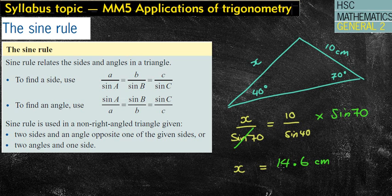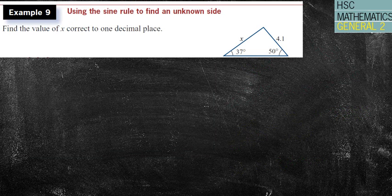The sine rule is used in non-right-angled triangles, as shown. And you need to have two sides and two angles. Now, I say two sides and two angles. That's four pieces of information, but one of them you are trying to find the value of. You can see that four values here. So two angles and their opposite sides, or the two sides and their opposite angles. So we'll go through a couple of questions. And again, I'll go through the process that I look for when trying to choose the right rule.